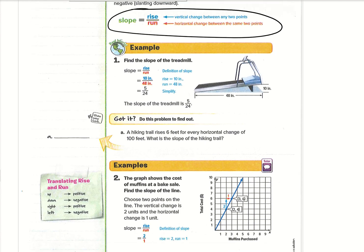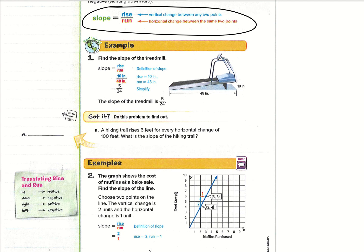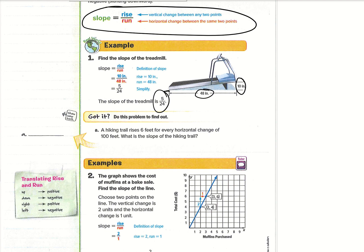So we have example one: find the slope of the treadmill. We have our rise is 10 inches because it's 10 inches up from where it's at zero, or on the ground. And then we have 48 inches here, which is the total length of the treadmill. We do rise over run, so 10 over 48. We can simplify that and get 5 over 24. So the slope of the treadmill is 5 over 24. Go ahead and give the 'got it' problem A a try — it should be pretty simple, sort of the same idea.